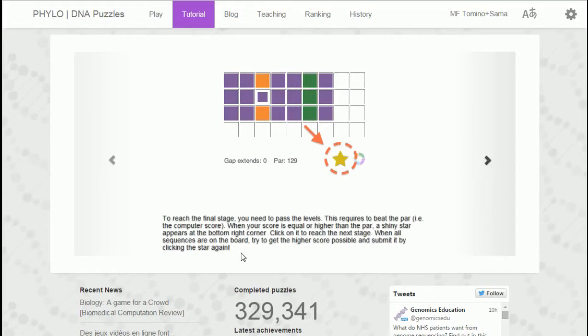To reach the final stage, you need to pass the levels. This requires to beat the par, i.e. computer score. When your score is equal or higher, a shiny star appears. Click on it to reach the next stage. When all the sequences are on the board, try to get the highest score possible and submit the star again.